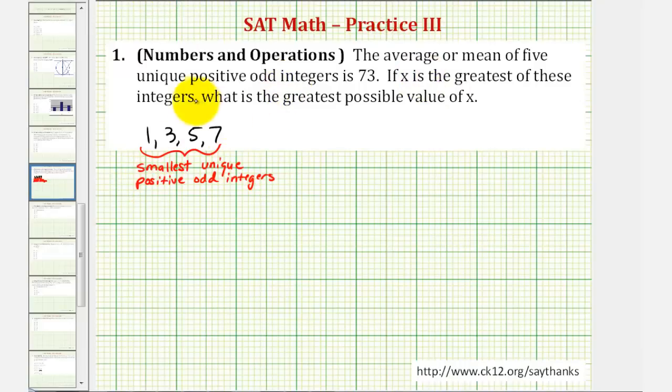The fifth unique positive odd integer is x, which we want to be as large as possible. So using these five numbers, we'll now find the average or mean, which we know is equal to 73.